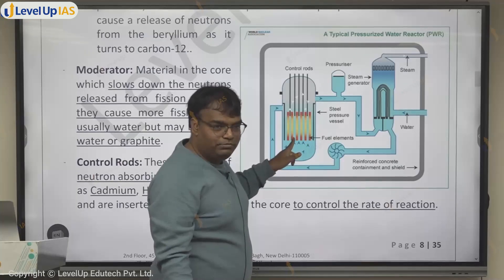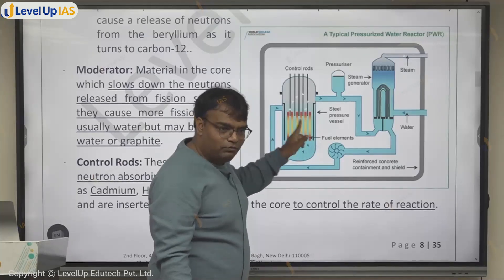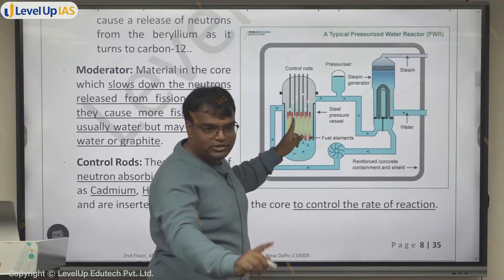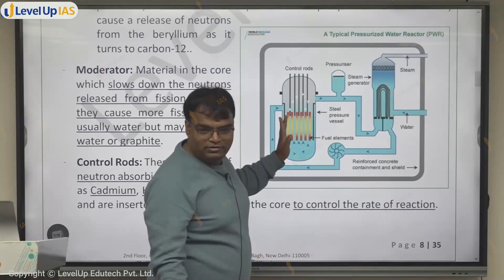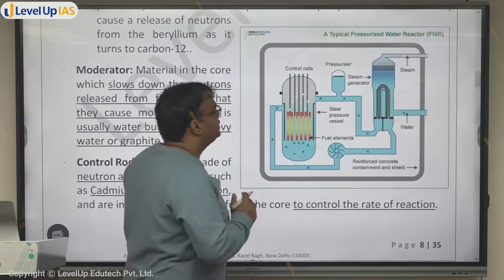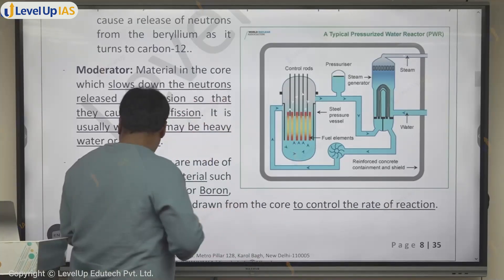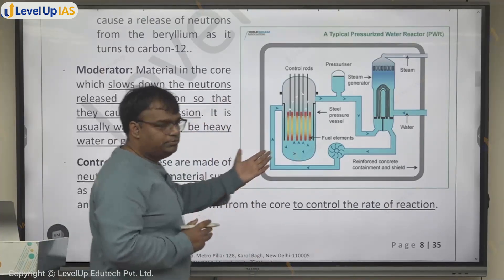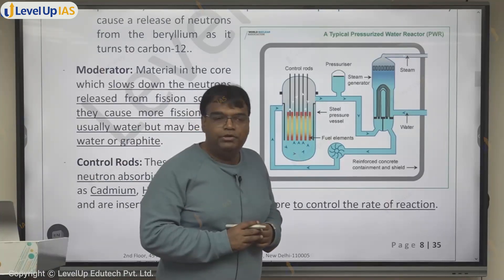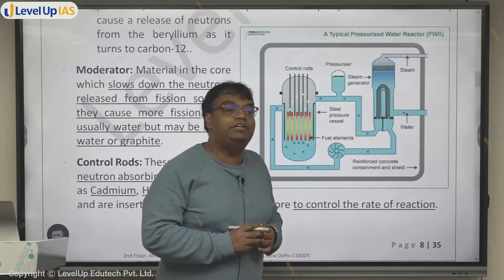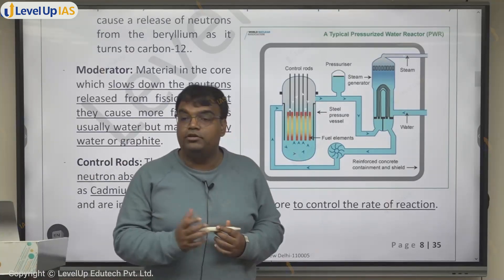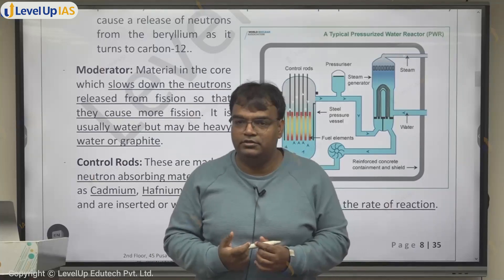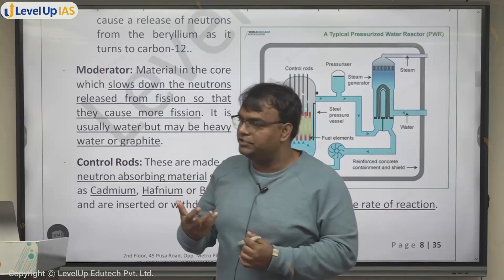So the components we have: uranium as fuel, water as moderator, and control rods to absorb extra neutrons. Now, one more thing — water is being used as moderator here, but this water is at very high pressure. This is called a pressurized water reactor.